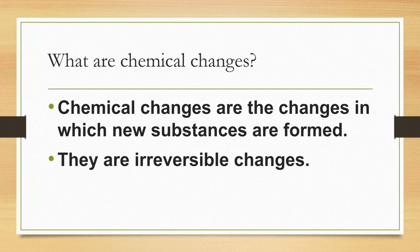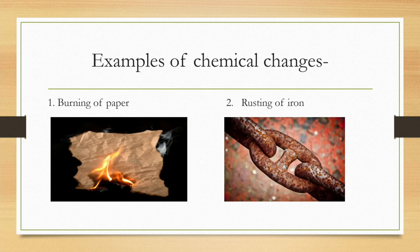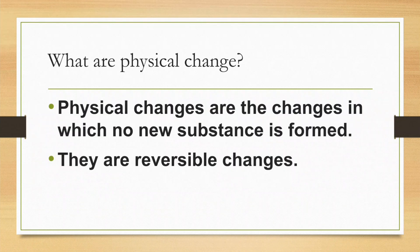Chemical changes are irreversible changes. What are irreversible changes? Irreversible changes are the changes which can't be reversed. Let us see some examples of chemical changes: burning of paper and rusting of iron.